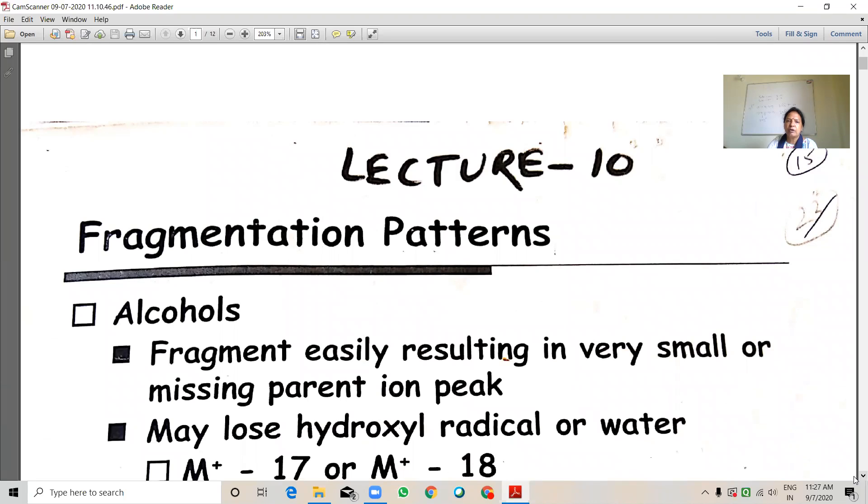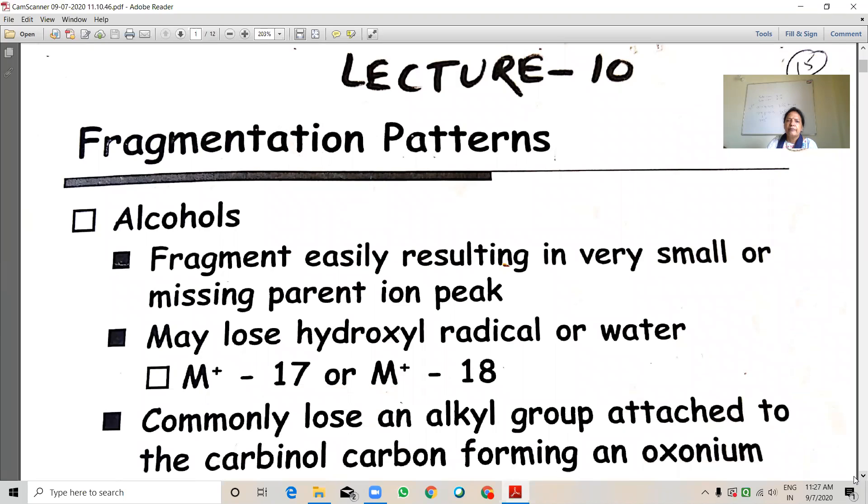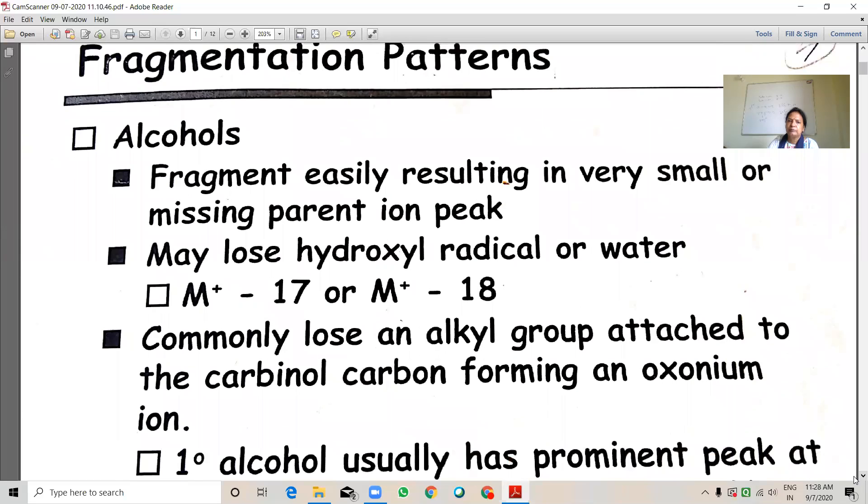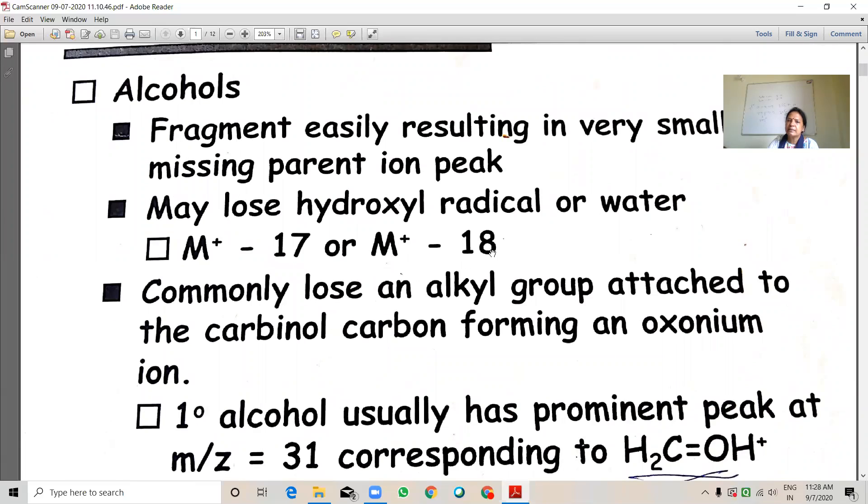Fragmentation pattern of alcohols. Fragment easily resulting in very small or missing parent ion peak. Here, parent ion peak alcohol is very small and almost missing. May lose hydroxyl radicals and water. M minus 17 and M minus 18. Commonly loss of an alkyl group attached to the carbon forming an oxonium ion. This is important.